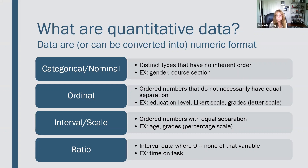A Likert scale — where you rate something on a scale of one to five from strongly disagree to strongly agree — is another example of ordinal data. This is a tricky one because a lot of people treat it as if those numbers are equally different, but in fact they're not. How different people interpret 'strongly' versus 'not strongly' can vary quite a bit — what I think is spicy is not necessarily what somebody else thinks is spicy.